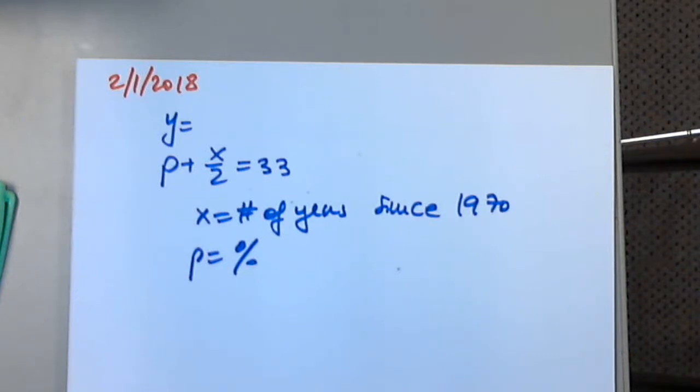Use this information to answer questions a and b below. Does the mathematical model underestimate or overestimate the percentage of adults who smoked cigarettes in 2010, and by how much? We are asked to determine the percentage in 2010.